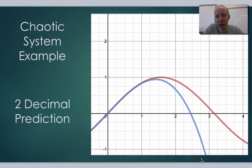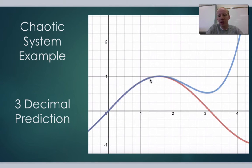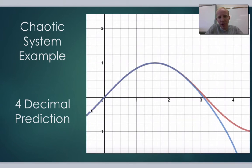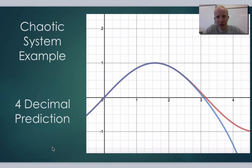If we go three decimal places, we'd be able to predict the outcome for longer. But then after three decimal places it's going to break down eventually and go way off from the actual behavior of the system. If we could get four decimal places of accuracy, it will predict the behavior for quite a long time, but then again it will eventually break off and not predict the system very well.